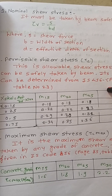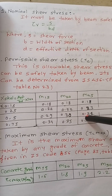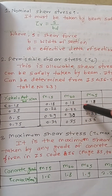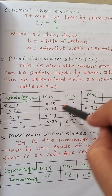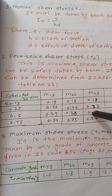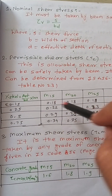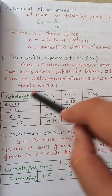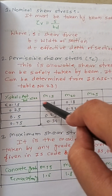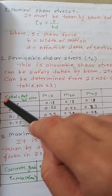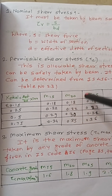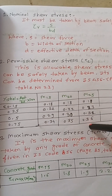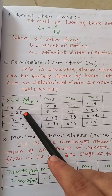I will try to provide the link to the IS code image for reference. From Table 23, I have listed values for three grades of concrete. The permissible shear stress depends on the percentage of steel, calculated as Ast / (b·d) × 100. If the percentage is less than or equal to 0.15, you take the corresponding value based on your grade of concrete.